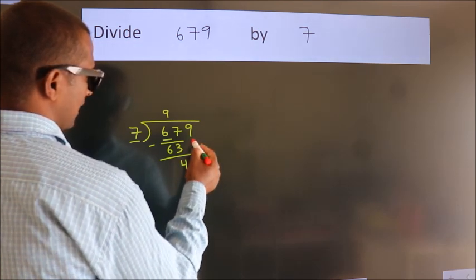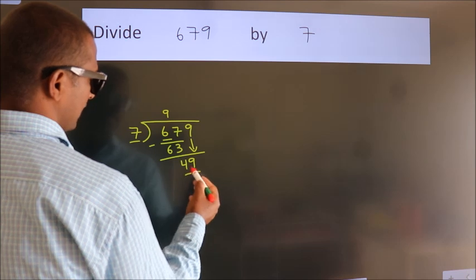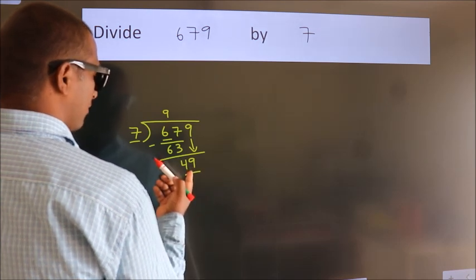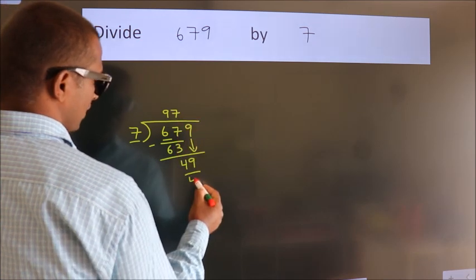After this, bring down the beside number. 9 down. So, 49. When do we get 49? In 7 table, 7 7s, 49.